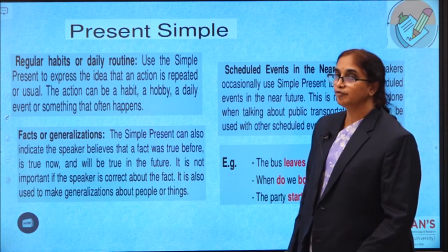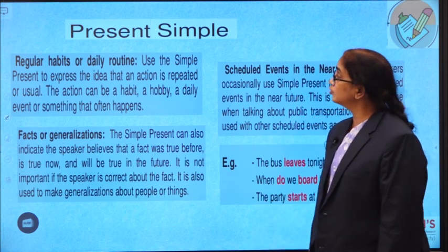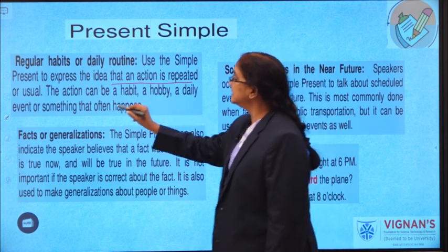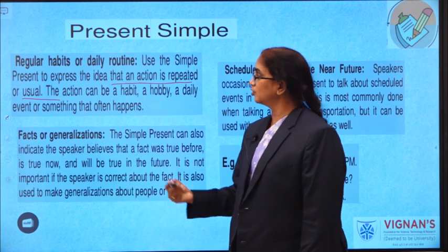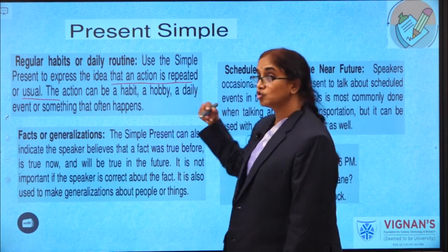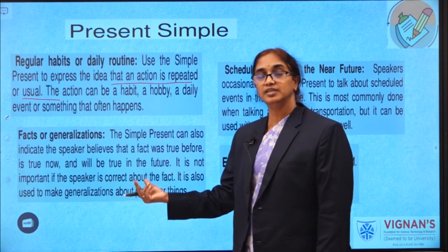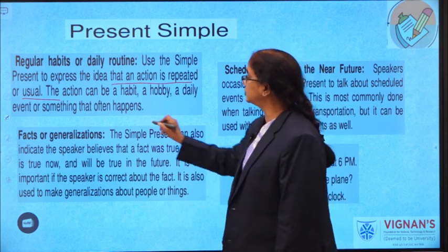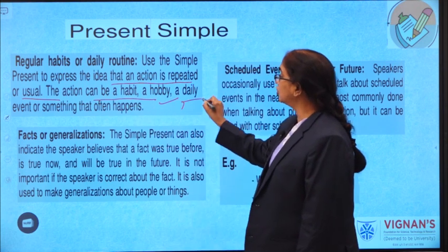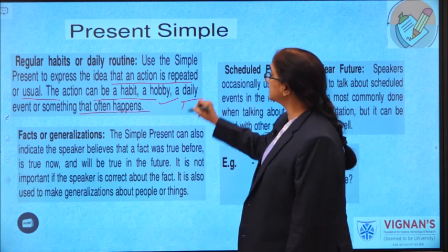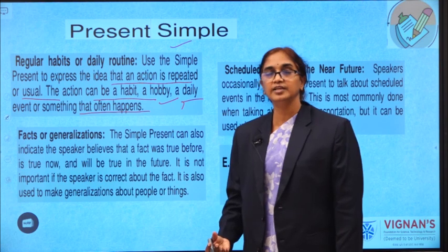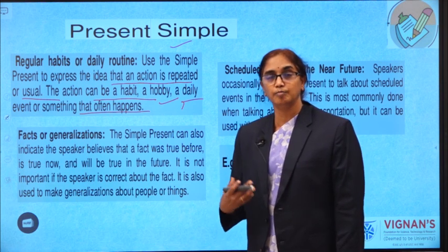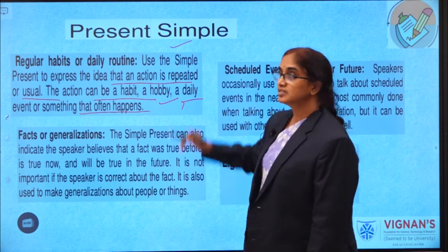Let us once again recall how we use simple present tense. It is used to express the idea that an action is repeated — a recurring action with no change or variation. For example: 'The sun rises in the east and sets in the west.' 'He gets up at 6 a.m. every morning.' It could be a habit, a hobby, or a daily event that happens frequently. As mentioned earlier, to talk about oneself, one's hobbies, one's routine, and one's role model, we use simple present tense.